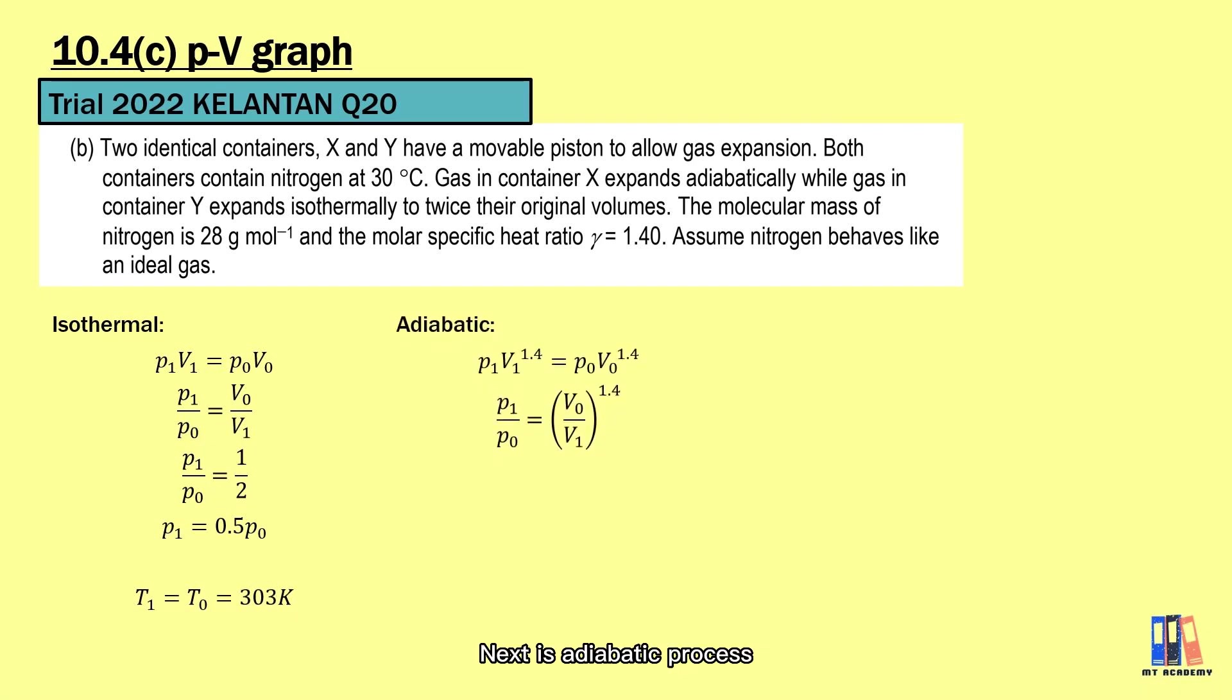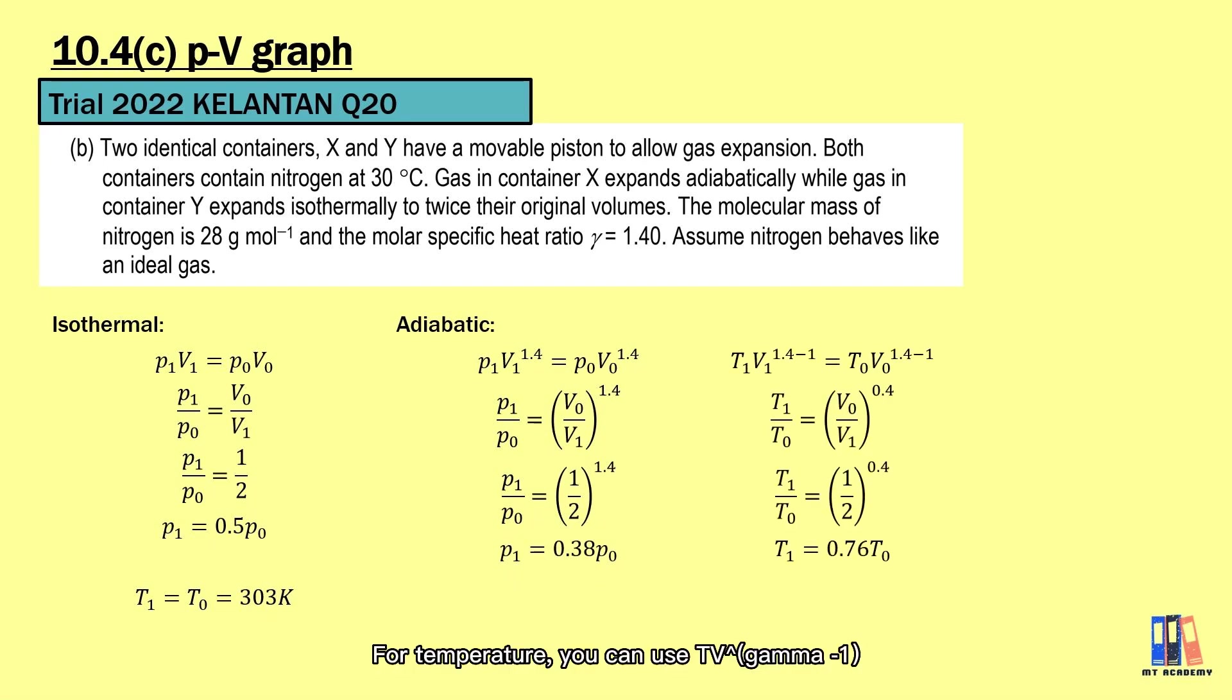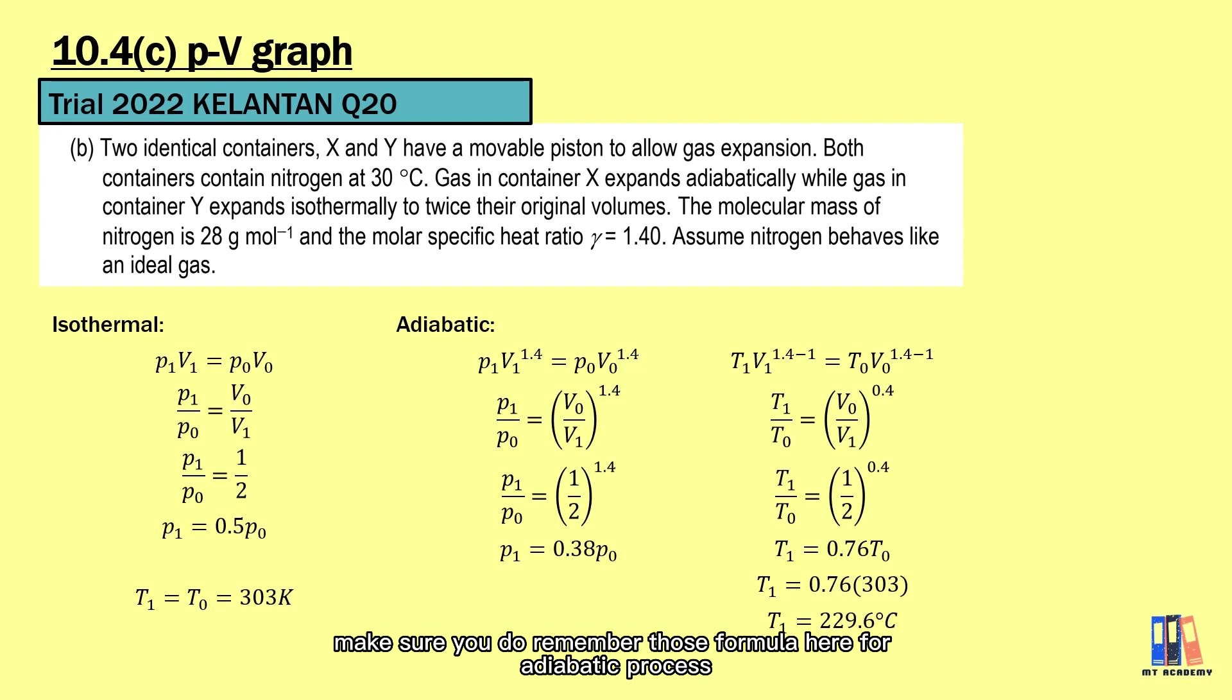Next is adiabatic process. Remember, use PV to the power of gamma as constant. From here, we can note that the final pressure is 0.38 of initial pressure. For temperature, we can use TV to the power of gamma minus 1, so make sure you do remember those formula here for adiabatic process and always convert the temperature to Kelvin unit.